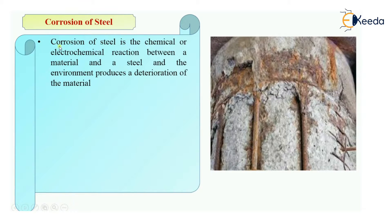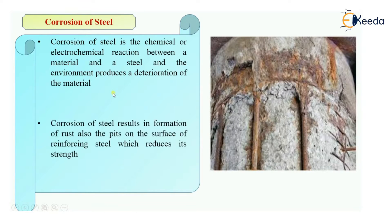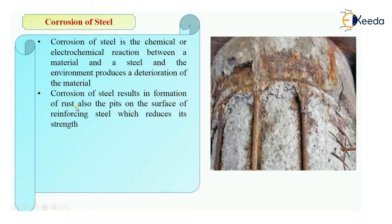So what is corrosion of steel? It is a chemical or electrochemical reaction between any material and steel and the environment, which produces deterioration of material. Corrosion of steel will also result in formation of rust on the steel surfaces.